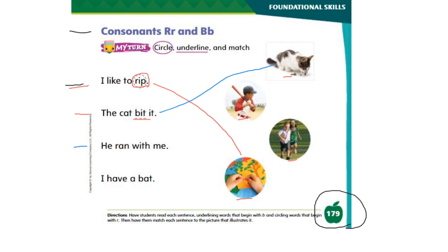Now I'll read the sentence for you: He ran with me. So do you see words with R or words with B? Don't forget to match the sentence to the picture. And the last sentence says: I have a bat. You circle words with R and you underline words with B. Take a picture of your work and send it to me when you're done. Thank you and bye-bye for now.